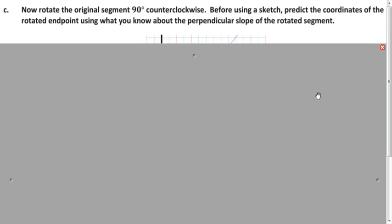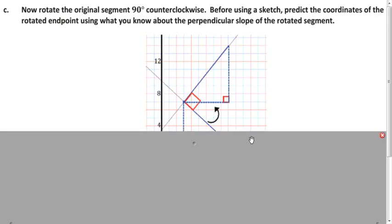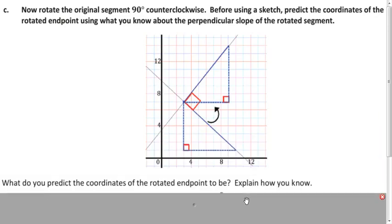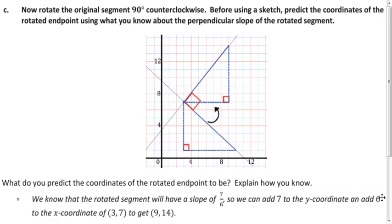Let's perform the same type of rotation, but now 90 degrees counterclockwise. Where do you think the coordinates of that endpoint will be using what we just learned? Here's the graph — hopefully you got the point (9, 14). Now we're rotating counterclockwise, so think about adding to each coordinate: add 6 to the x-coordinate to get 9, add 7 to the y-coordinate to get 14. So the point is (9, 14).